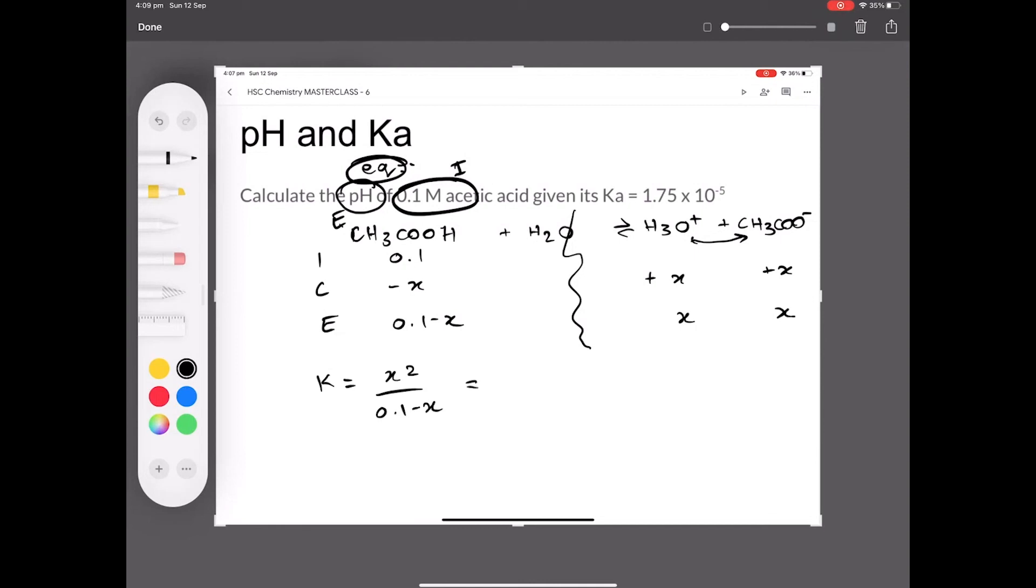Shashant, what can we assume about this x value at the denominator? That it'd be close to zero. Good, so you just write x squared is equal to 0.1 times 1.75 times 10 to the power negative 5. What do we get for x? And if you don't worry about the x, tell me what the pH is everyone. 2.9.